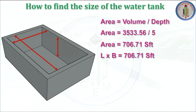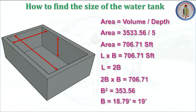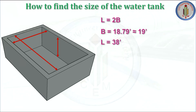From this area we need to find the length and breadth. Let L × B = 706.71 sq ft, and assume L = 2B. Substituting: 2B × B = 706.71, which gives B = 19 feet. Since L = 2B, we get L = 38 feet. So the dimensions are: Length = 38 feet, Breadth = 19 feet, Depth = 5 feet.